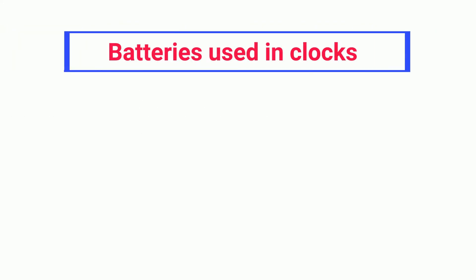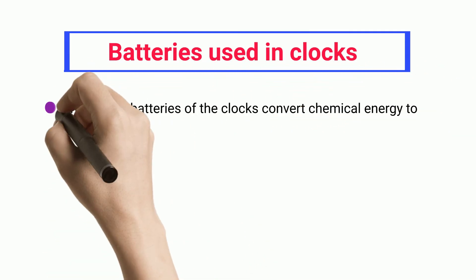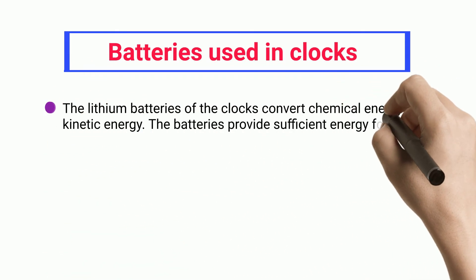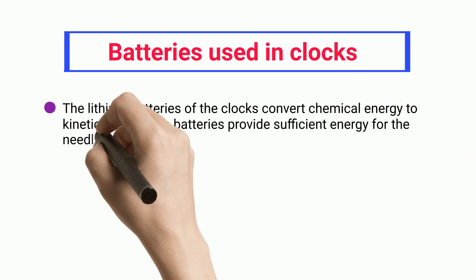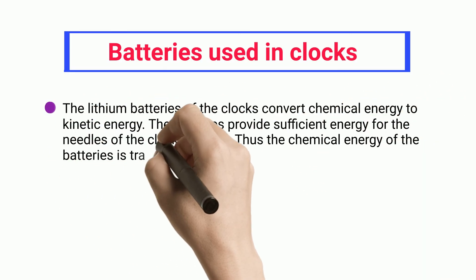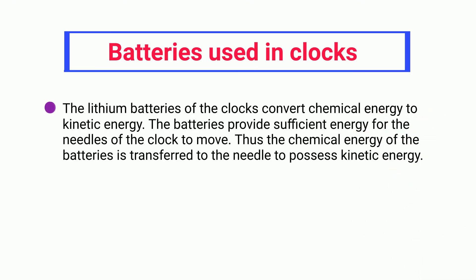Batteries Used in Clocks. The lithium batteries of clocks convert chemical energy to kinetic energy. The batteries provide sufficient energy for the needles of the clock to move. Thus the chemical energy of the batteries is transferred to the needle to possess kinetic energy.